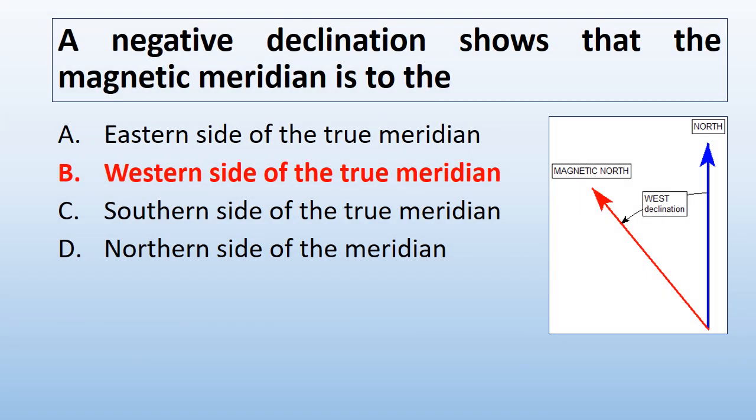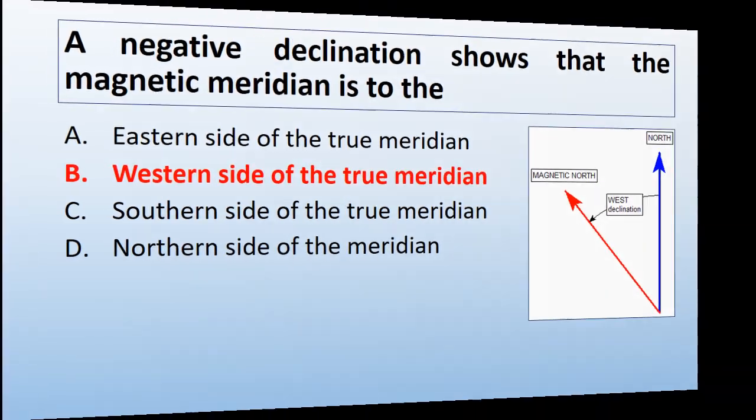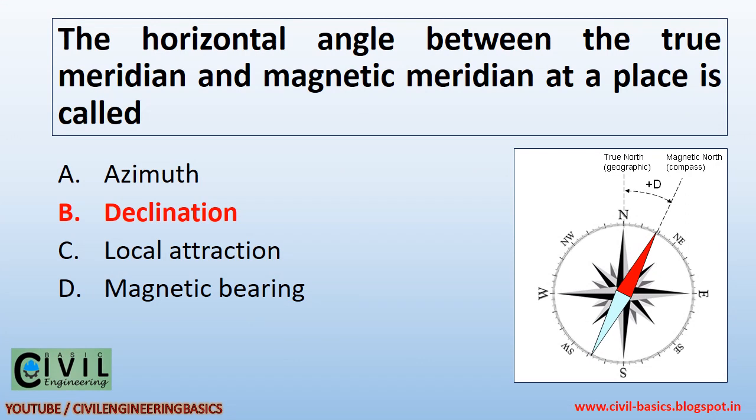A negative declination shows that the magnetic meridian is to the western side of the true meridian. The horizontal angle between the true meridian and magnetic meridian at a place is called declination.